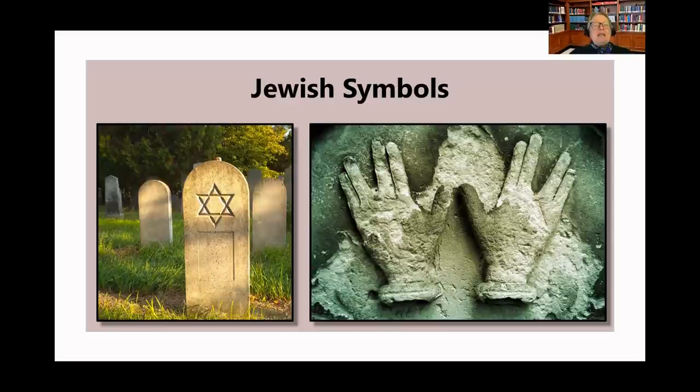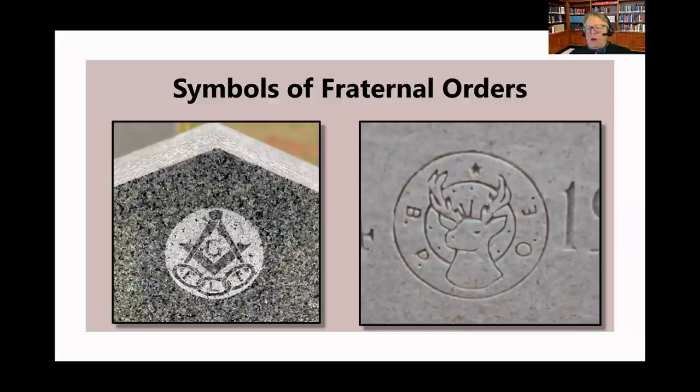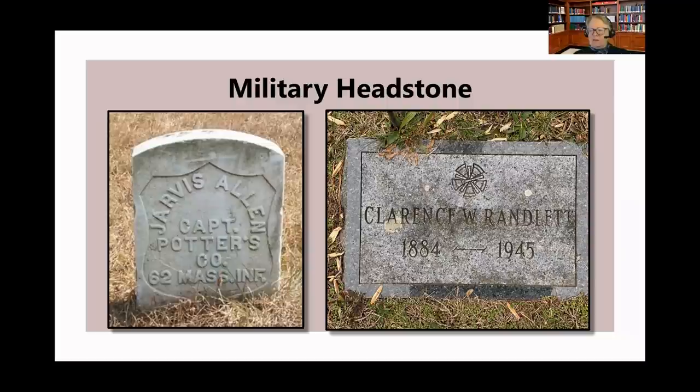Jewish symbols: the most frequently used is probably the Star of David. The marker on the right shows two hands connected at the thumb, symbolizing the blessings of the Kohen. Fraternal orders can also be represented on tombstones — the one on the left shows the Masonic symbol with the compass and the builder's square. The marker on the right is for the Benevolent and Protective Order of Elks, with the elk's head in the center.